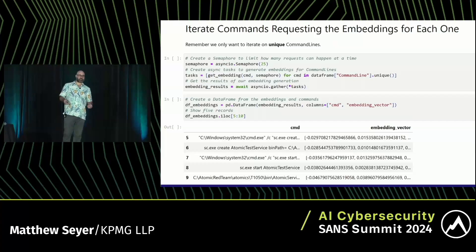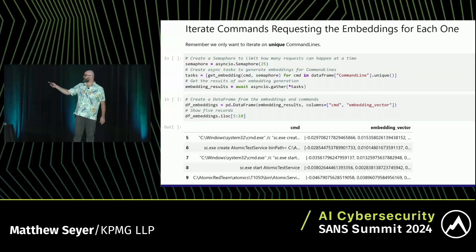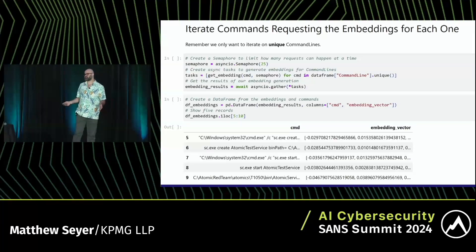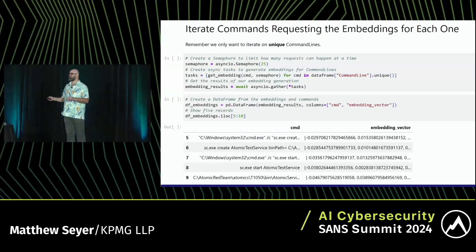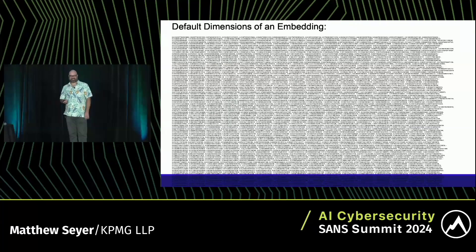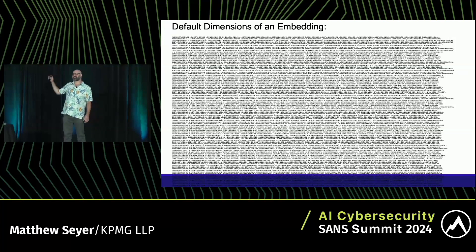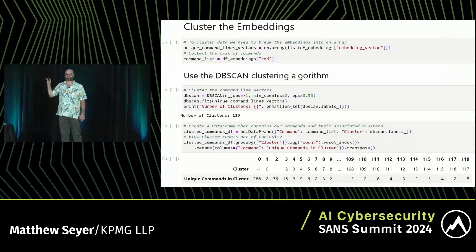We create a bunch of tasks fed with our command lines and execute them all at the same time. The semaphore you see is just saying never execute more than 25 at any given time, because otherwise you might hit throttling limits. In the end, what you get back is a data frame that gives you commands and embeddings. What does an embedding look like? It's just a bunch of numbers — if you zoom out, it's just tons of numbers. But these numbers represent the essence of that command line, which is really cool, because now you can cluster all of these commands by similarity.